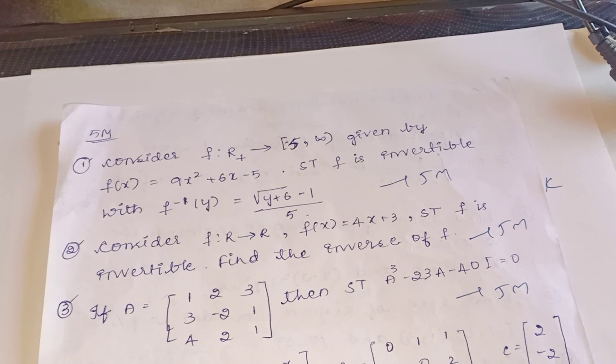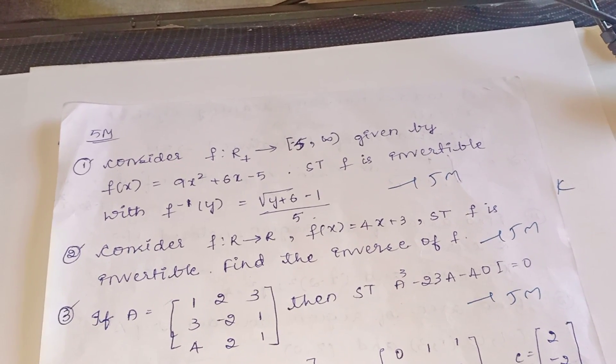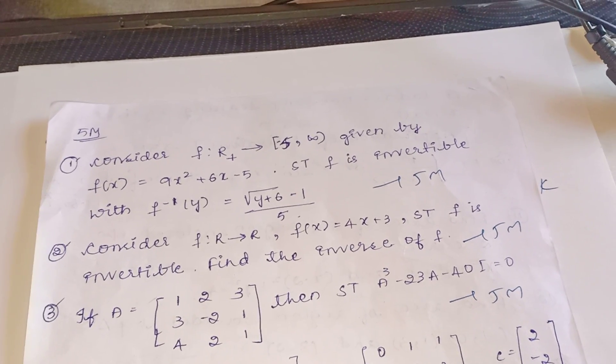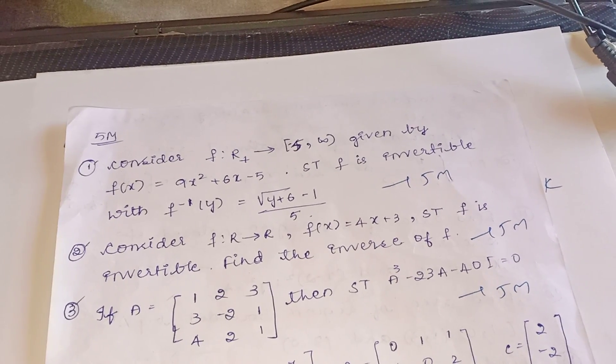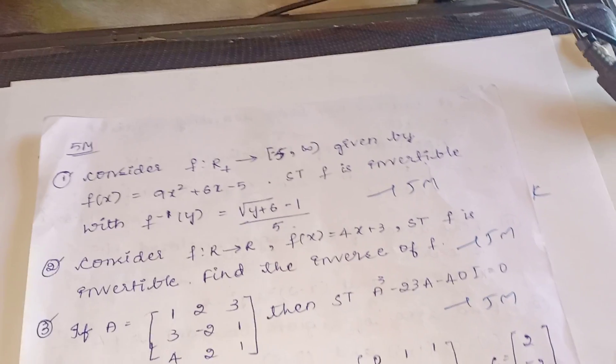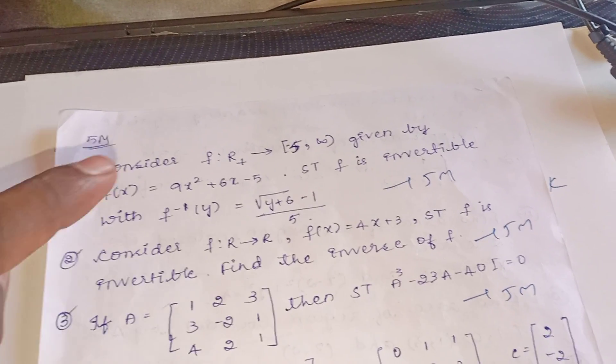One is this: consider f maps R plus to minus 5 comma infinity given by f(x) = 9x² + 6x - 5. Show that f is invertible with f inverse y = √(y+6) - 1 / 5. In this, actually two questions are there. One is this one, one is another one. Out of these two, one is compulsory.